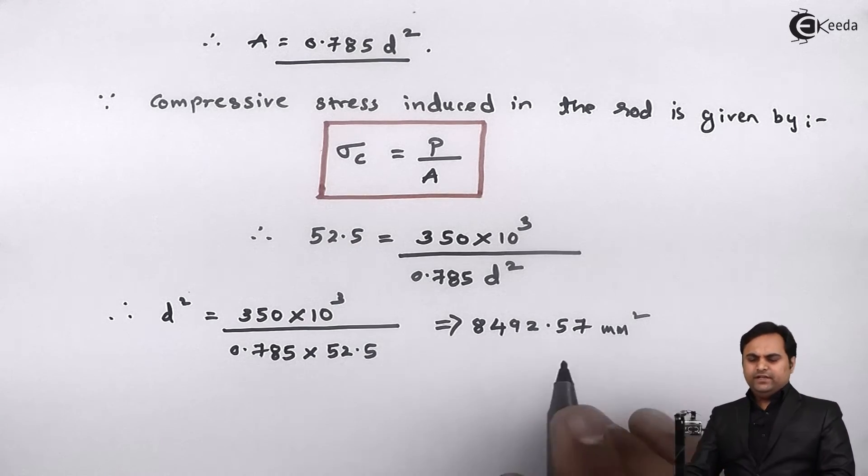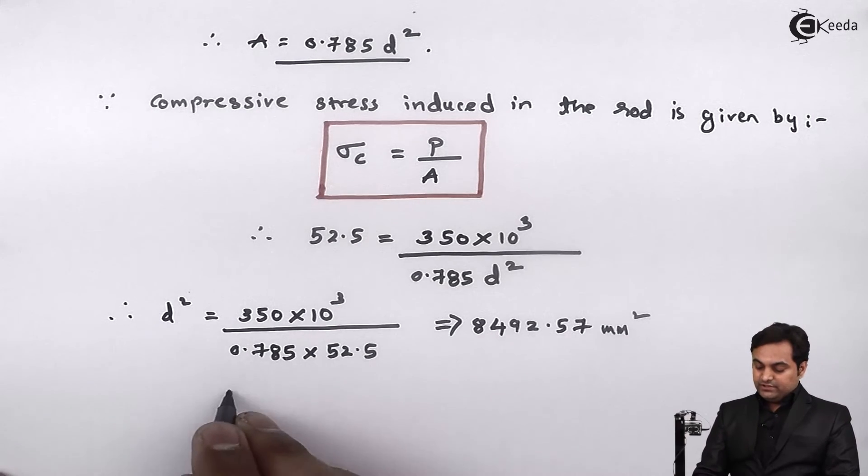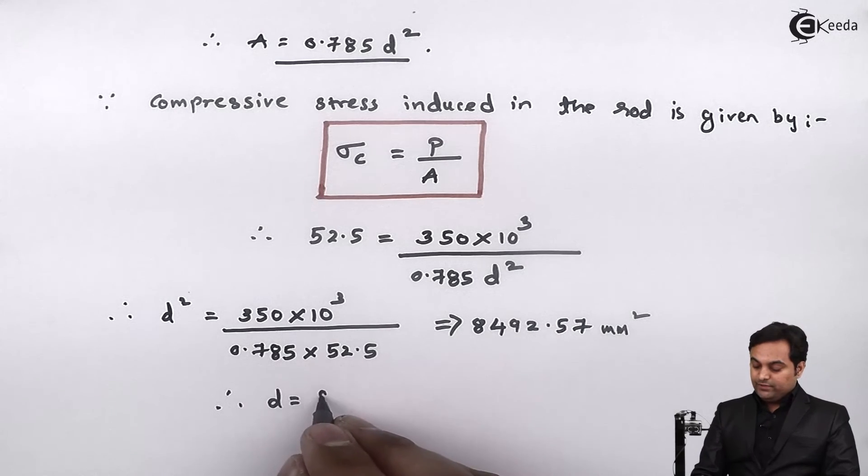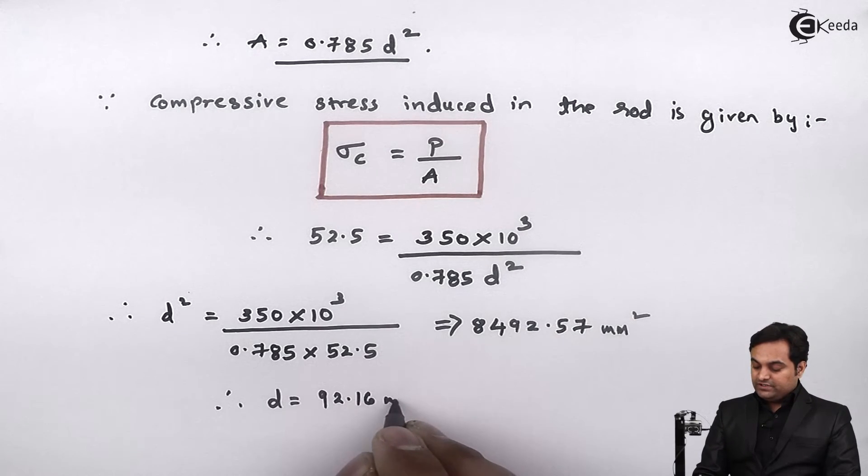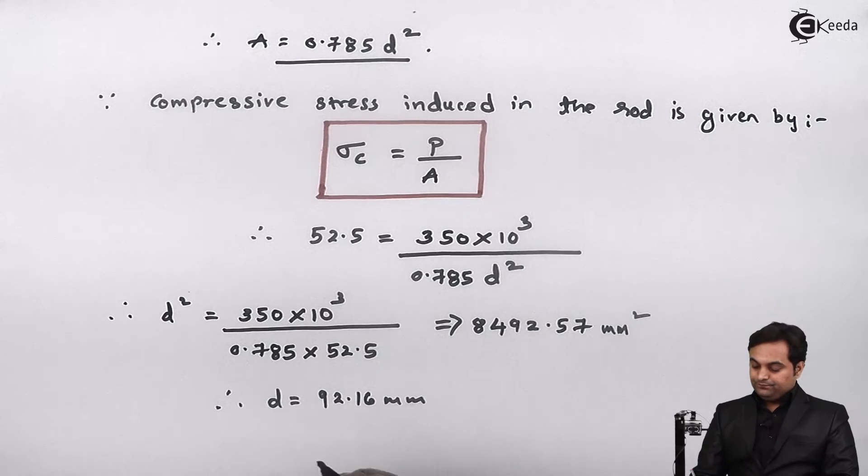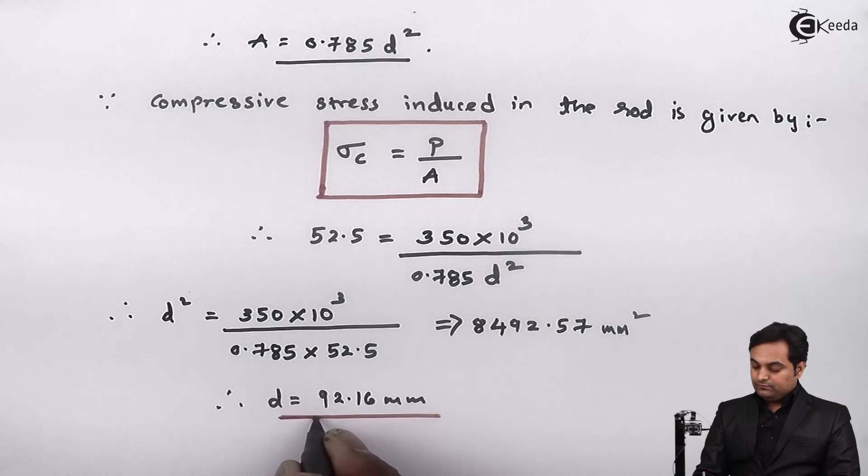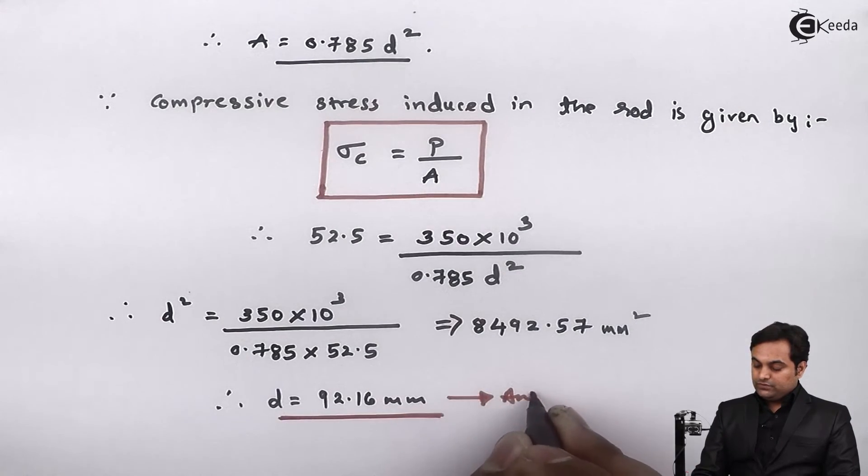but we want d, so I'll take the square root of this and after taking the square root my answer comes out to be 92.16 mm. So this is the answer